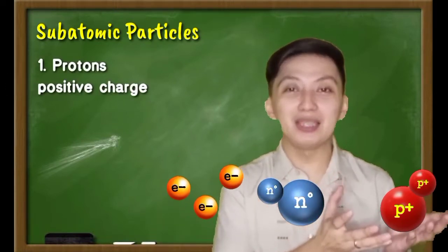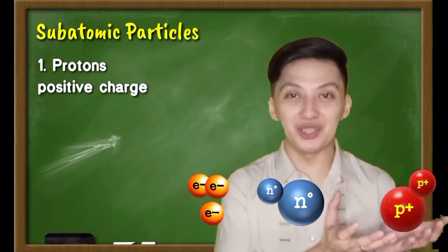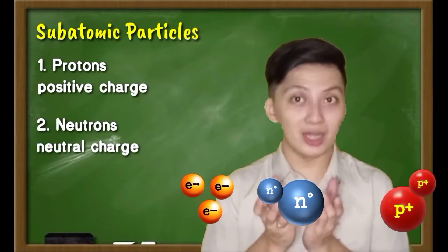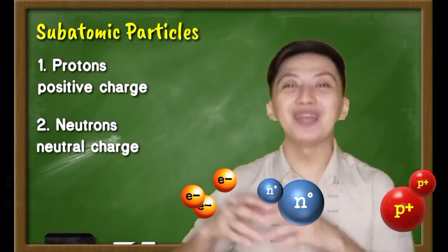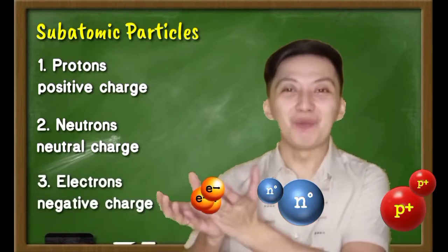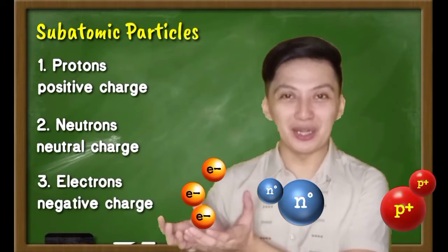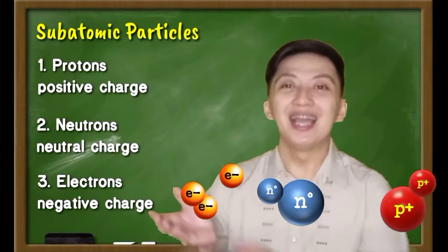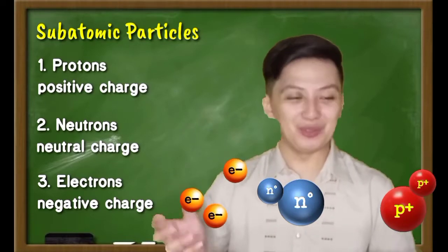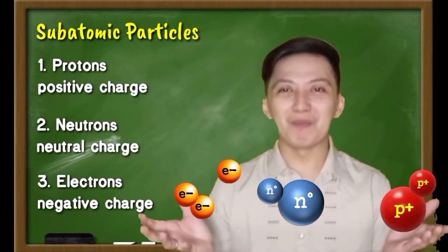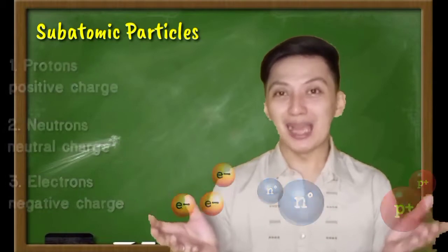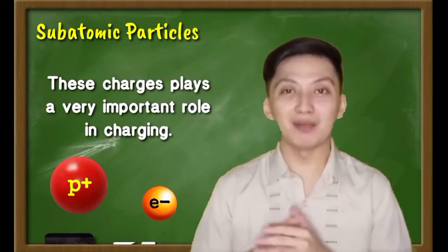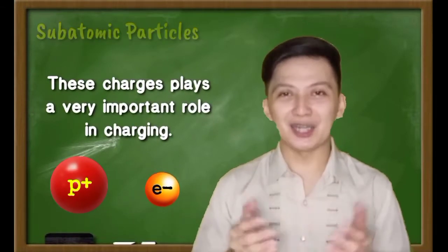Protons are said to be the positively charged. Neutrons are the neutral ones, or have no charge at all. And we have electrons, which are the negatively charged and the only moving part of the atom. Those are the three subatomic particles of an atom, and they play a very important role when it comes to charging.